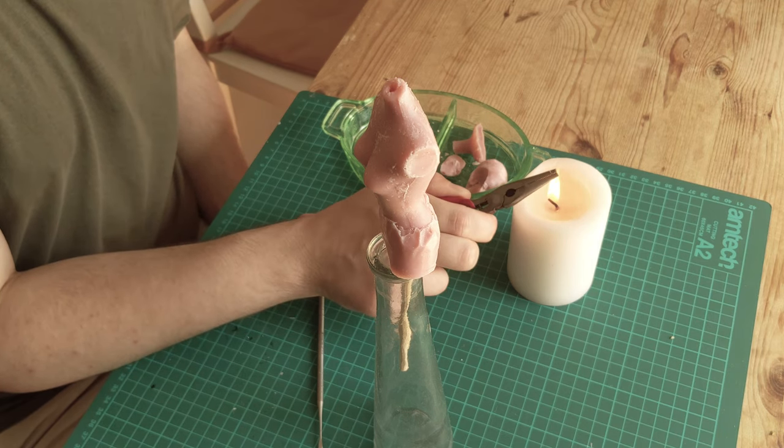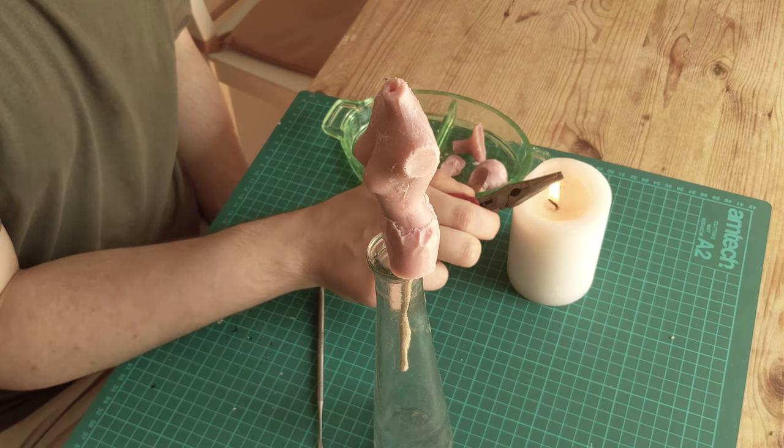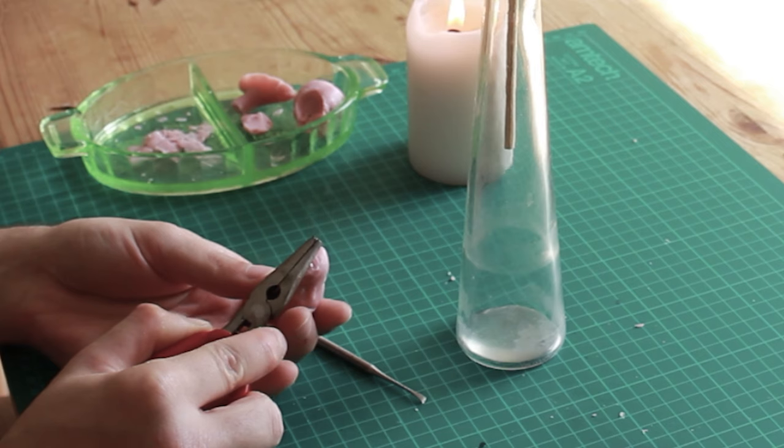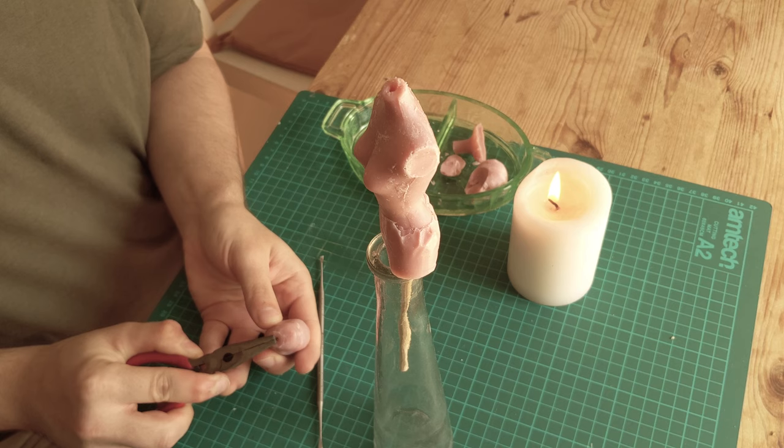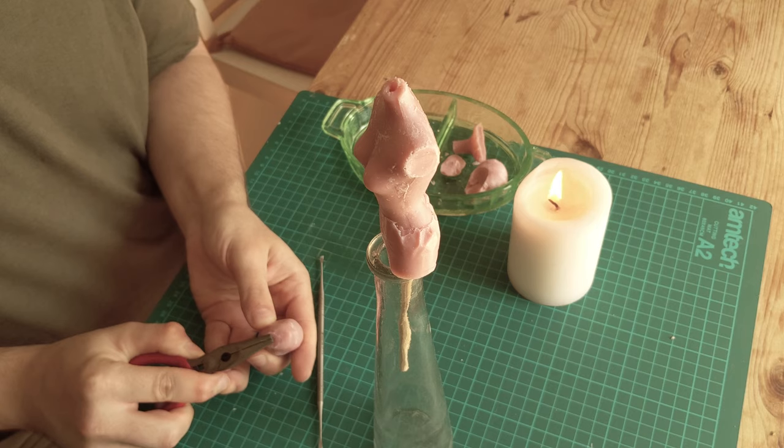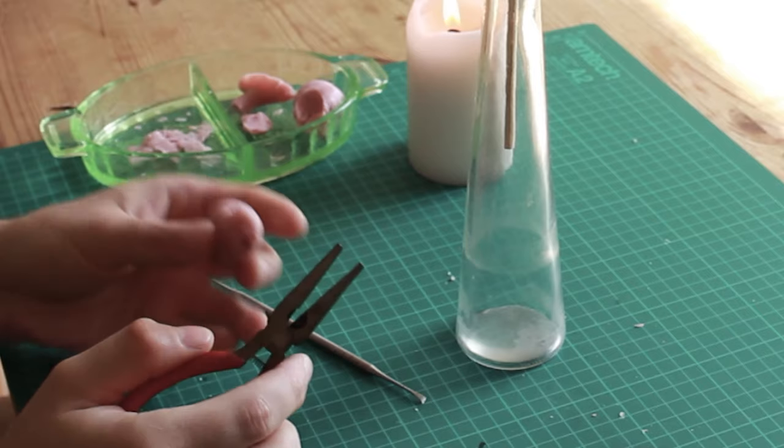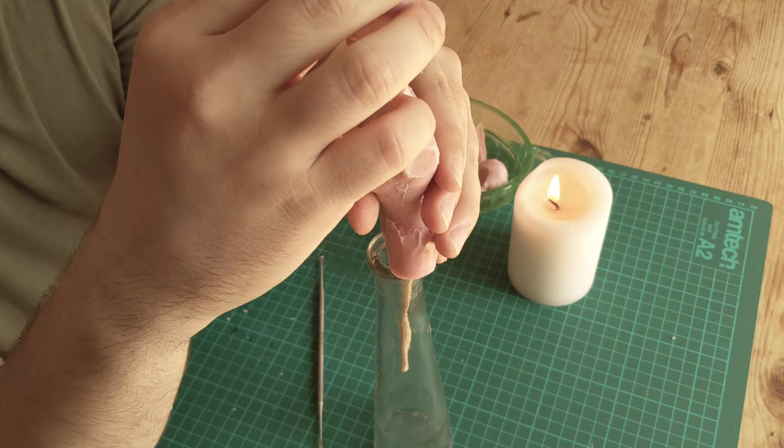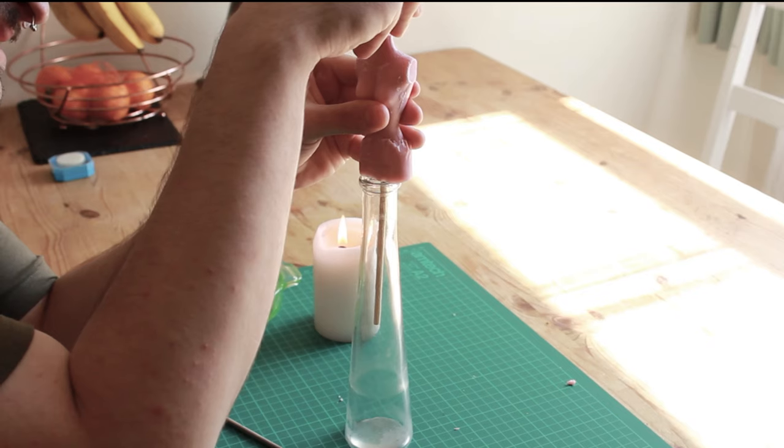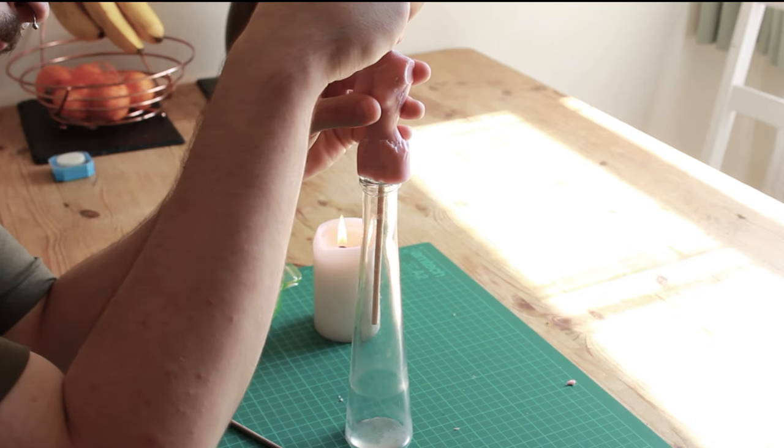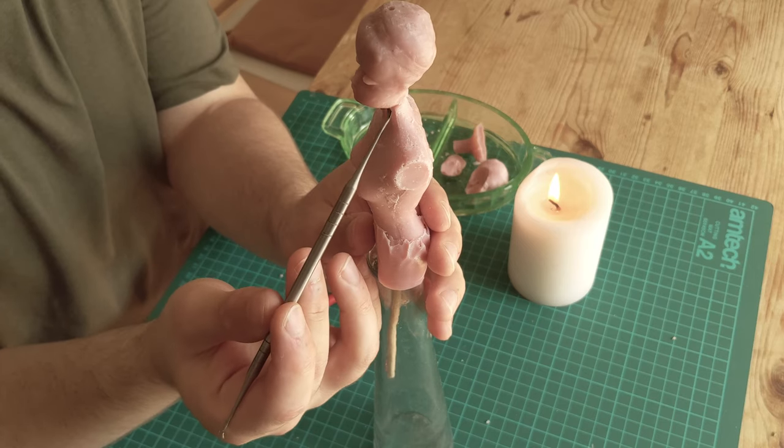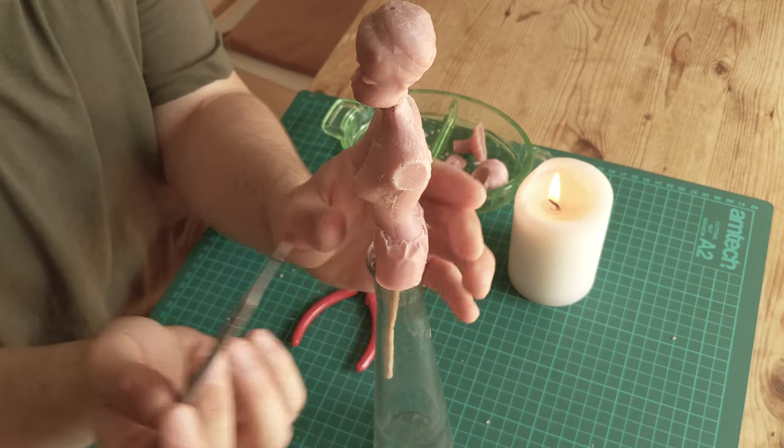To reattach her head, I heat up a pin and use it to connect the head to the body to give me some support. From here, it's just a matter of scraping and making everything smooth. The utensil I'm using is a tooth scraper, which has really nice sharp edges.